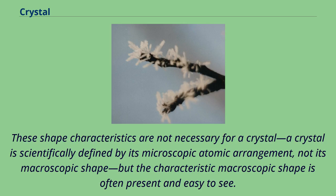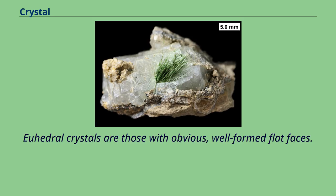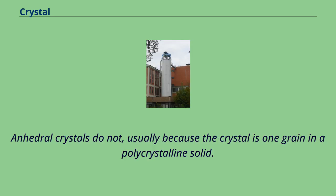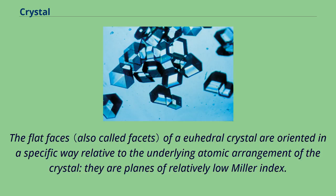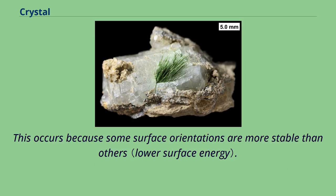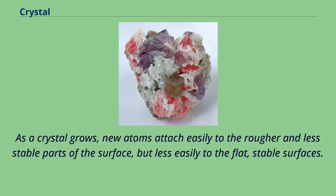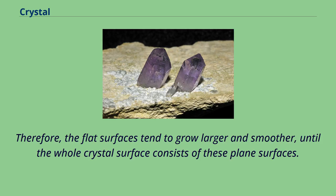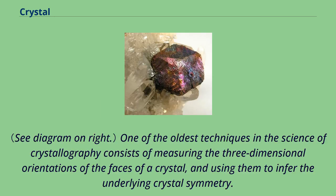Euhedral crystals are those with obvious, well-formed flat faces. Anhedral crystals do not, usually because the crystal is one grain in a polycrystalline solid. The flat faces of a euhedral crystal are oriented in a specific way relative to the underlying atomic arrangement — they are planes of relatively low Miller index. This occurs because some surface orientations are more stable than others. As a crystal grows, new atoms attach easily to the rougher and less stable parts of the surface, so flat surfaces tend to grow larger and smoother until the whole crystal surface consists of these plane surfaces.